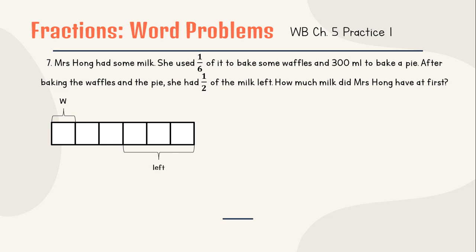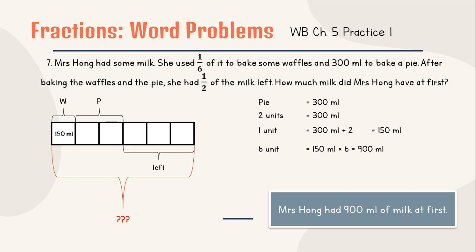Now we know: do we know how many boxes for 300 milliliters to bake a pie? Yes, it means the rest. So that is for pie. And now we know that pie is 300 milliliters, and there are 2 units for pie. So 1 unit will be 150 milliliters. Can we find out how much milk did Mrs. Hong have at first? If 1 box equals 150, so for 6 boxes, 150 times 6 equals 900 milliliters. So Mrs. Hong had 900 milliliters of milk at first.